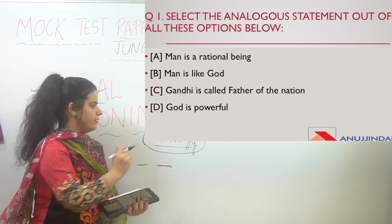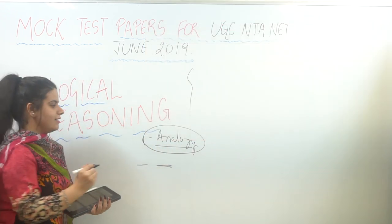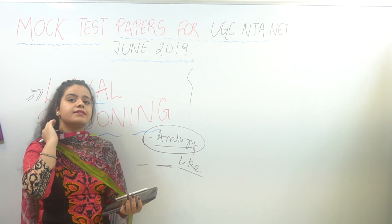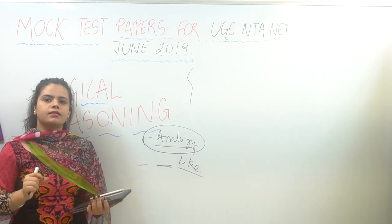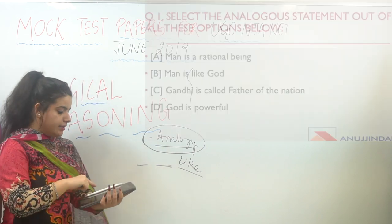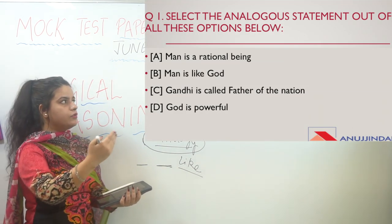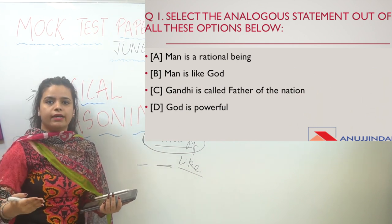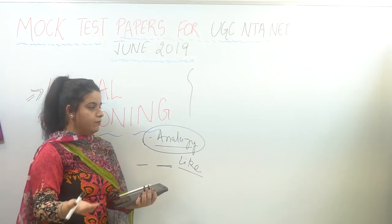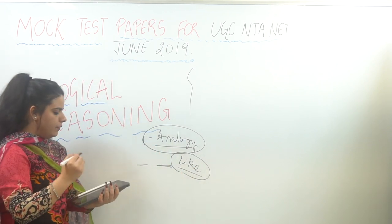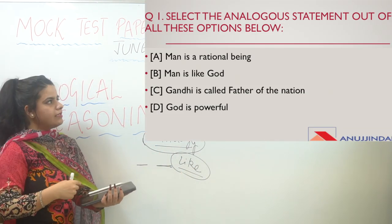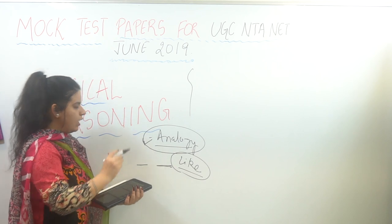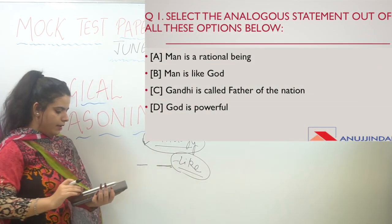The best way to identify an analogous statement is to look for the word 'like.' If you check previous UGC exam papers, you'll notice the answer mostly uses the word 'like.' Here, 'Man is like God' uses 'like' to draw a comparison and show something by example. So the answer is 'Man is like God.' The rest of the options are not analogous statements.